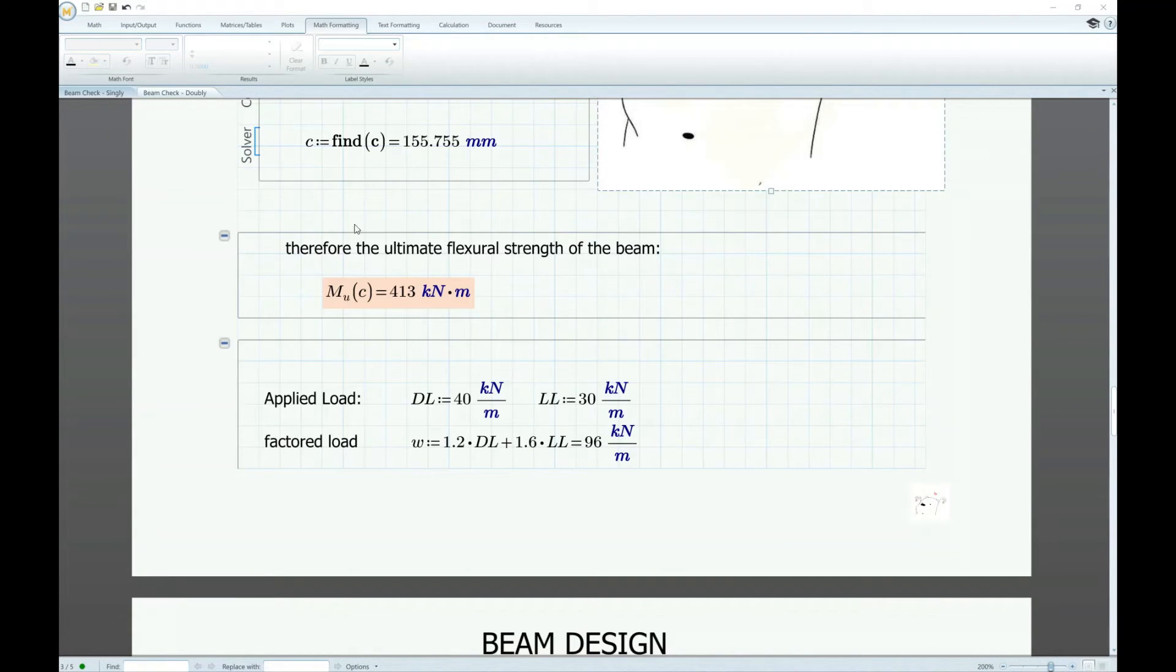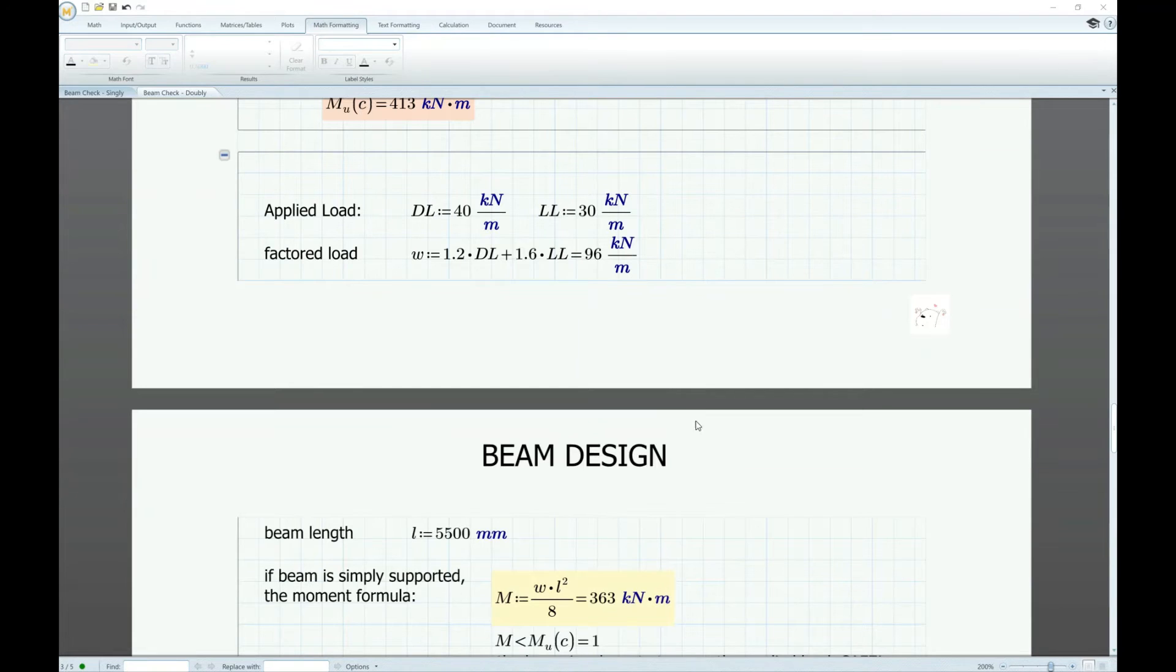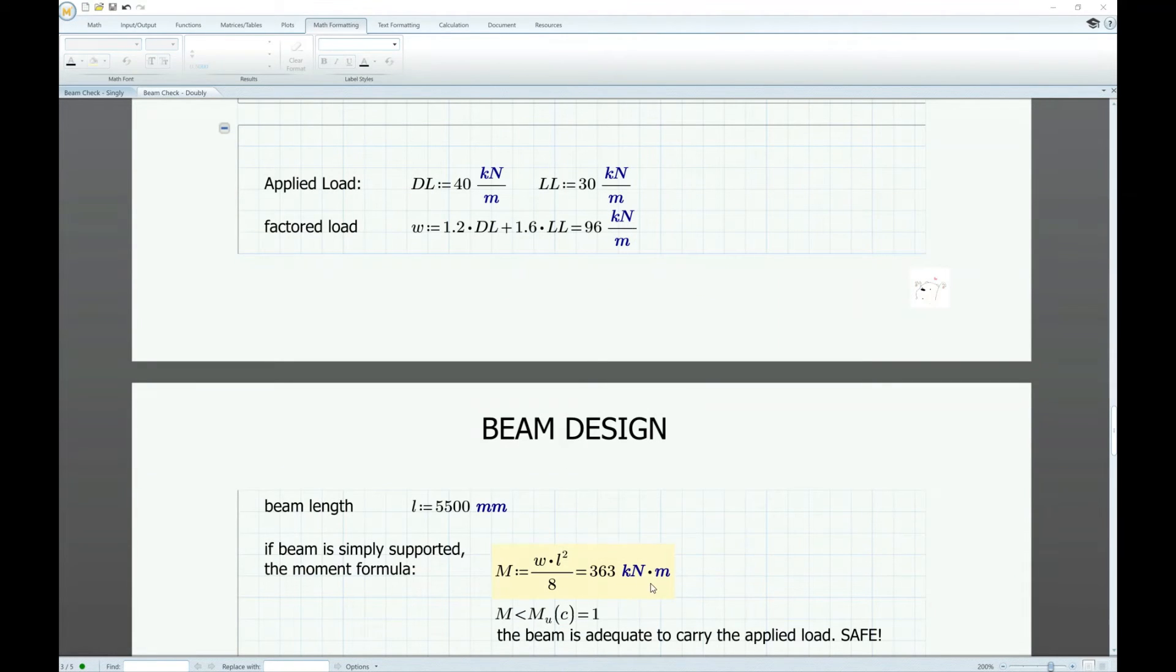So as you notice the value of C did not change, that's because we added the same amount of steel at the top and at the bottom. But the value of our flexural strength, the ultimate capacity, changed to 413 kilonewton meter which is greater than the applied moment 363. MathCAD gives the value of one if the condition is correct and gives the value of zero if the condition is not correct. So the applied moment is less than the moment capacity so the beam is adequate to carry the applied load, so it's safe.